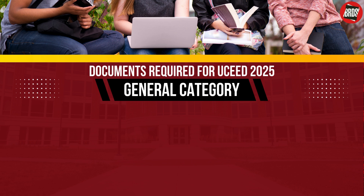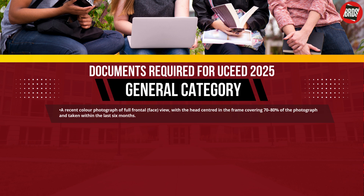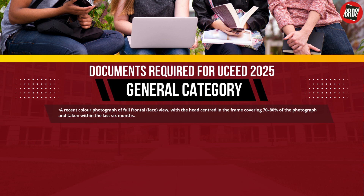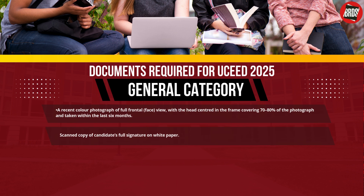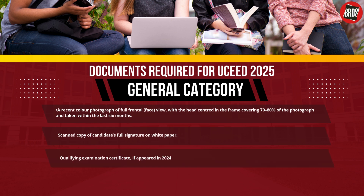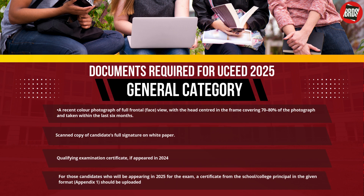Let's look at the documents required for filling in the application form for the general category. A recent color photograph of a full frontal face view with the head centered in the frame covering 70–80% of the photograph, taken within the last 6 months, is accepted. Only JPEG image format with file extension JPG will be accepted. A scanned copy of the candidate's full signature on white paper — only JPEG JPG format is accepted. Qualifying examination certificate if appeared in 2024 — only PDF format is accepted. For candidates appearing in 2025, a certificate from the school/college principal in the format given in Appendix 1 should be uploaded in PDF.